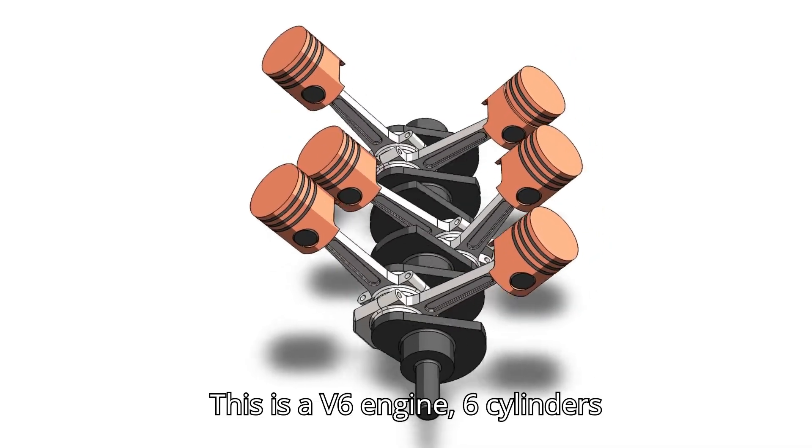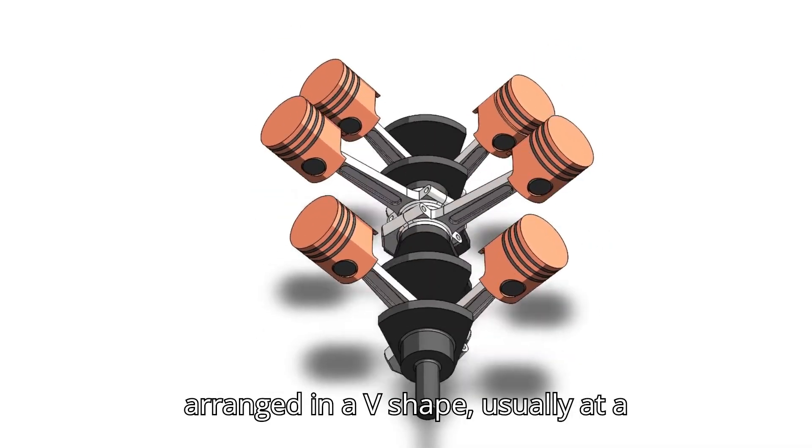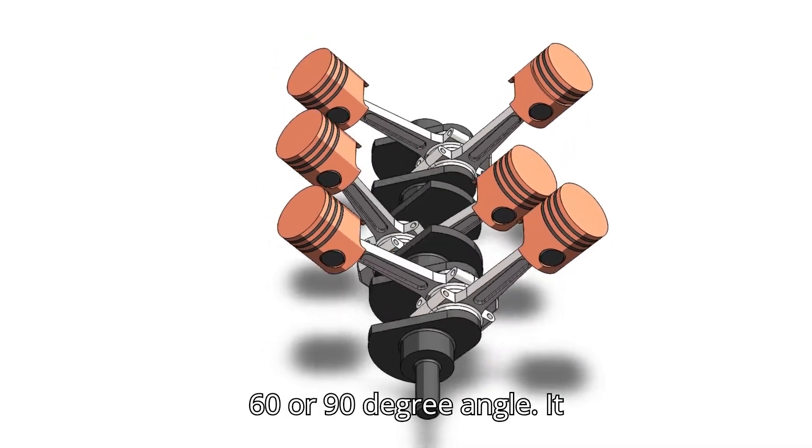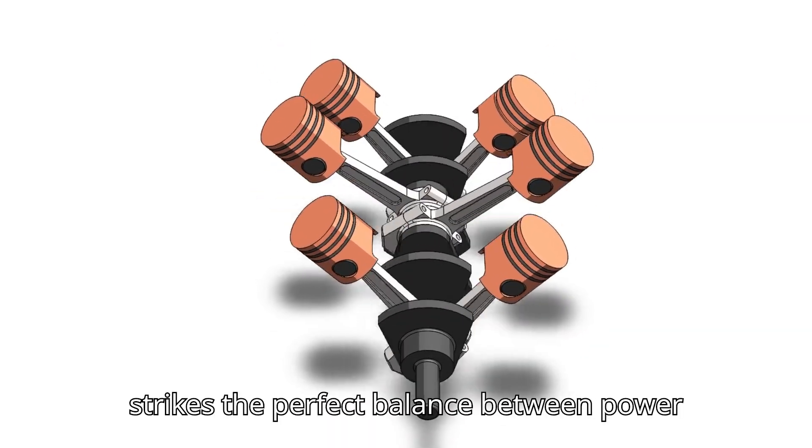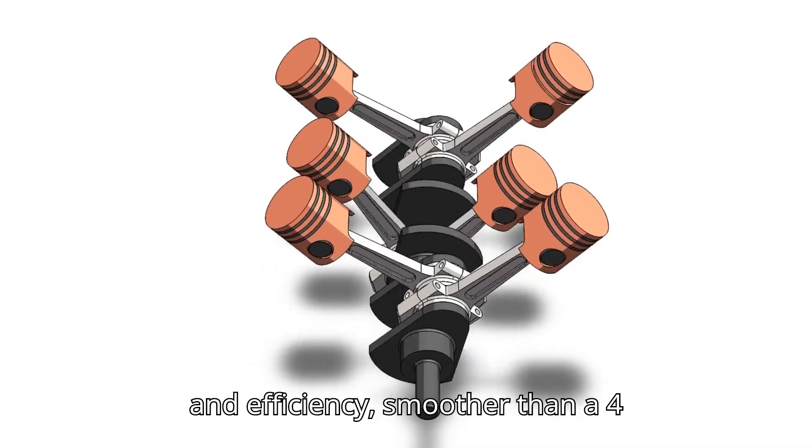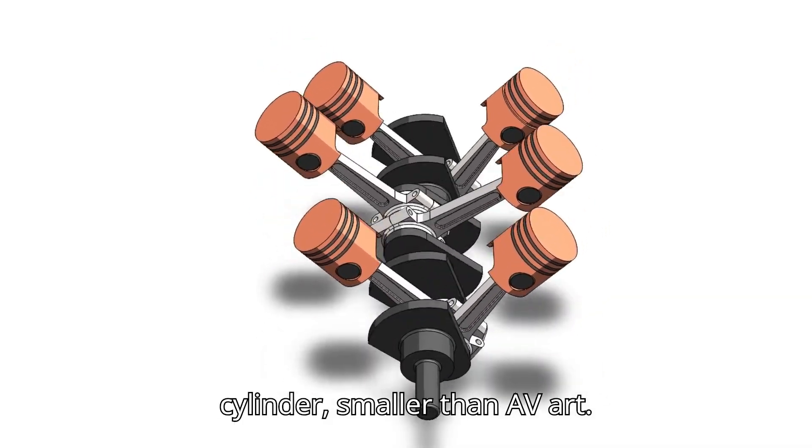This is a V-6 engine, six cylinders arranged in a V-shape, usually at a 60 or 90 degree angle. It strikes the perfect balance between power and efficiency, smoother than a four-cylinder, smaller than a V-8. Found in sports cars, sedans and SUVs.